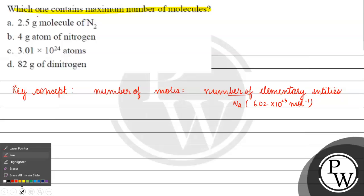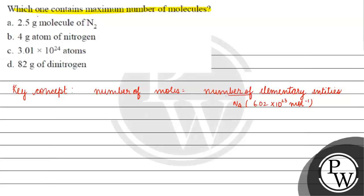Now, first of all, Option A says 2.5 gram molecule of nitrogen. If we talk about gram atom or gram molecule, it is basically denoted by the mole. So this means 2.5 moles of nitrogen.